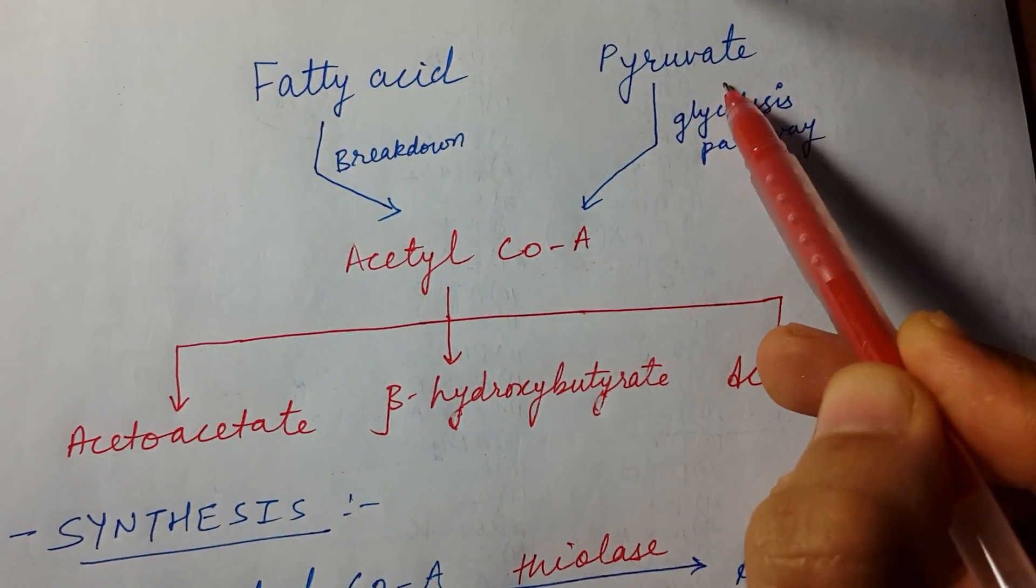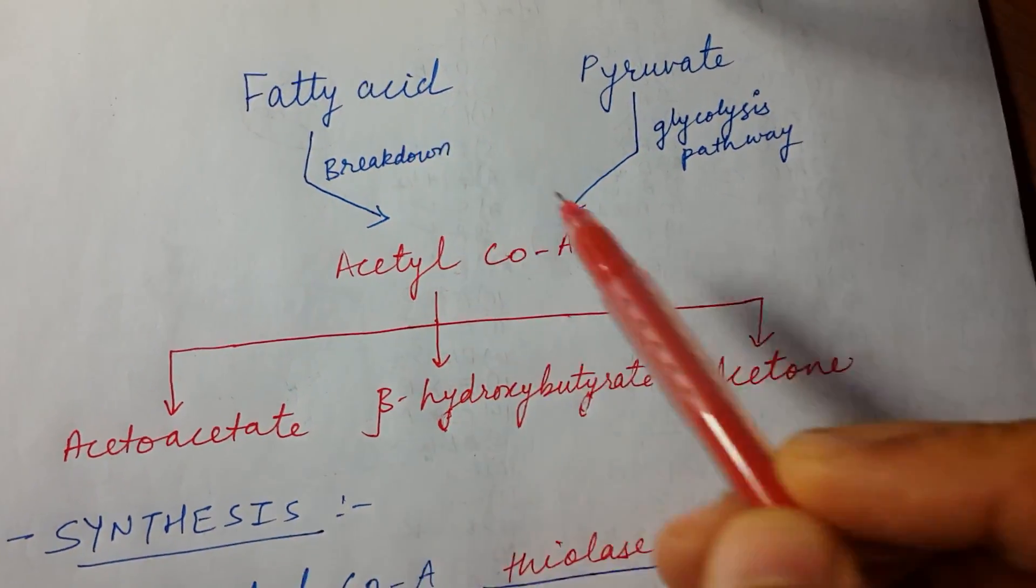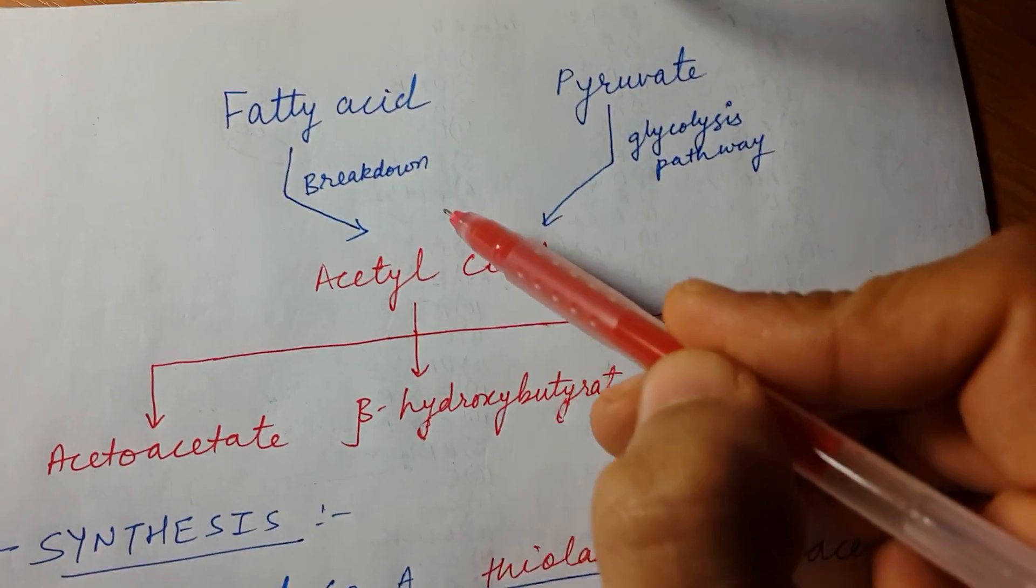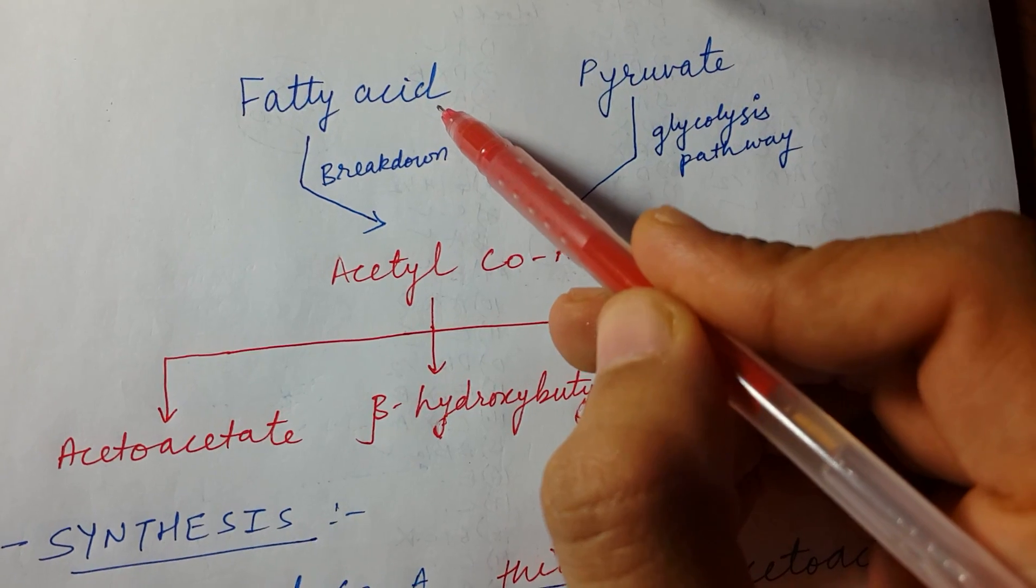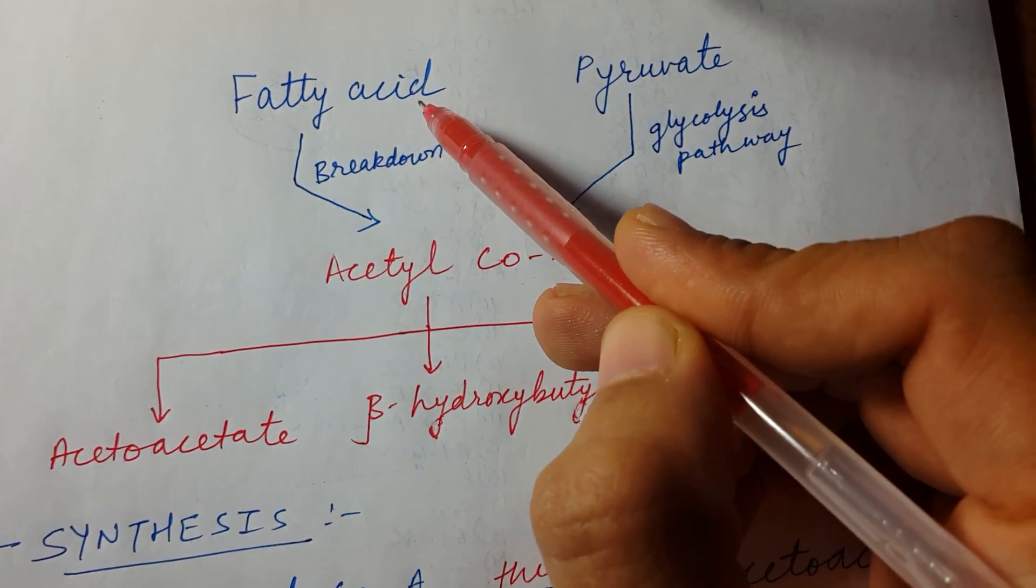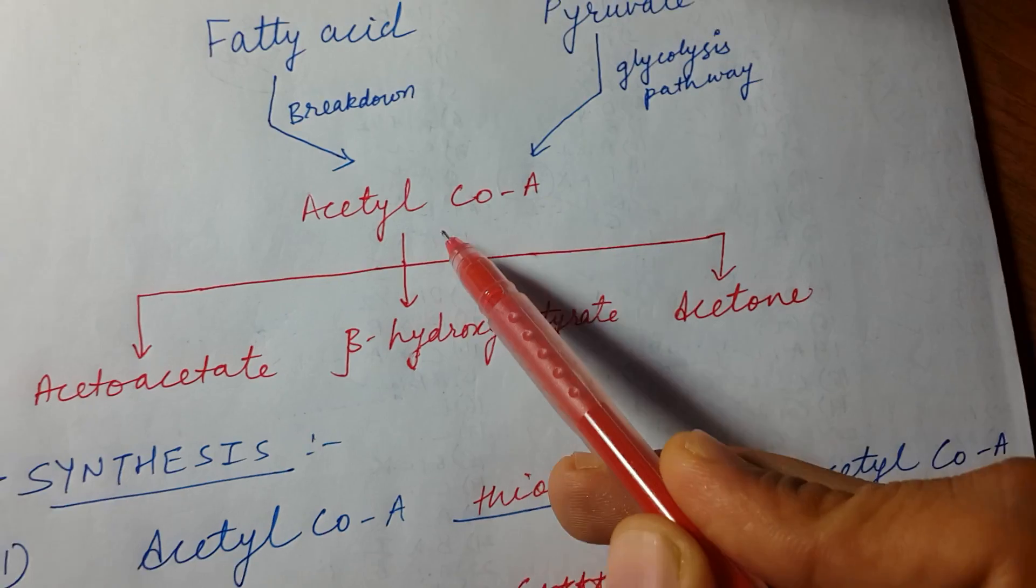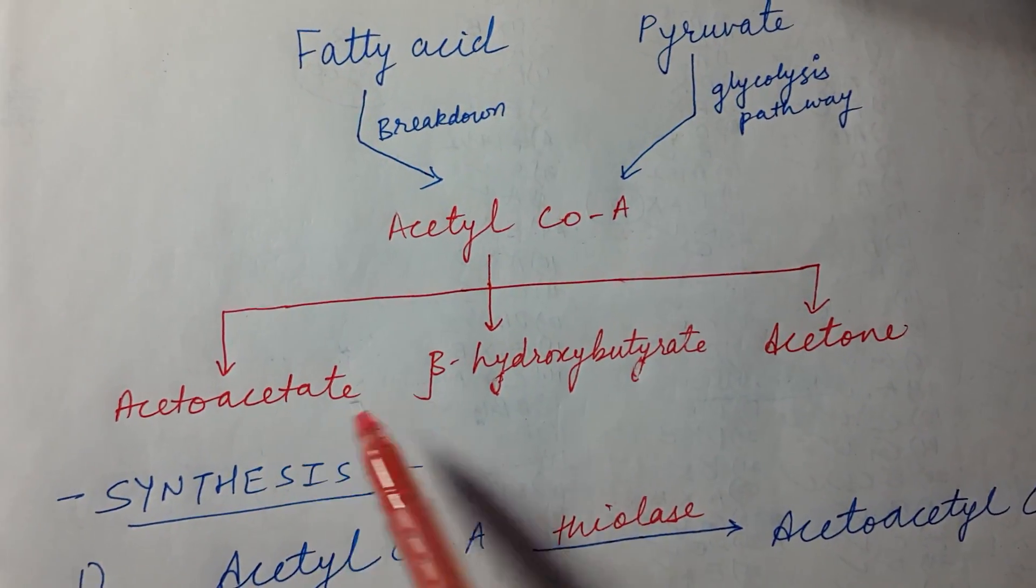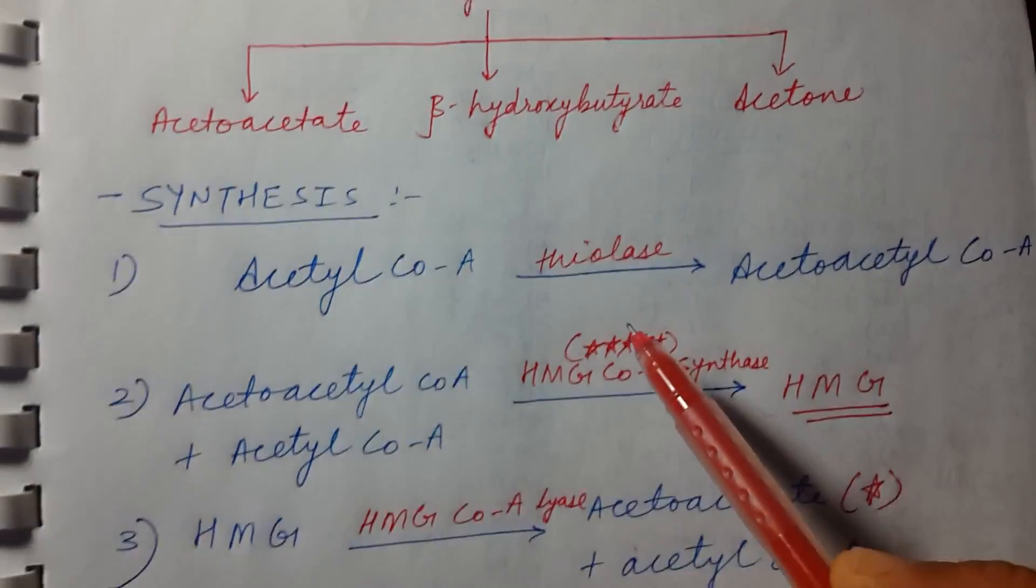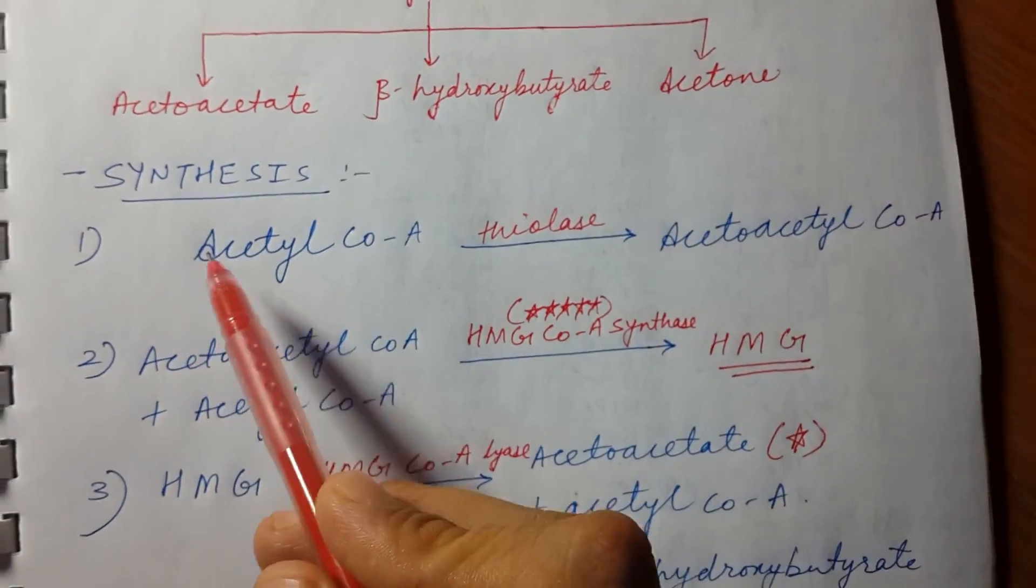Now see, whenever we are hungry or starving, when we don't eat anything, there will be fatty acid breakdown. There will be breakdown of the fat in the body which will release acetyl coenzyme A, and thus our body will form ketone bodies.